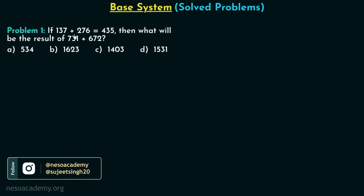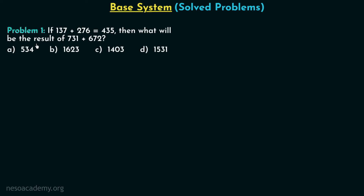If 137 plus 276 is equal to 435, then what will be the result of 731 plus 672? There are four options given: option A is 534, option B is 1623, option C is 1403, and option D is 1531.